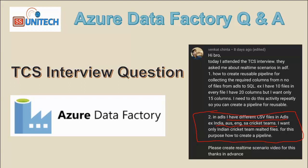So for example, if any tournament is going to happen, all those details will be in a particular CSV file. That file will have combinations like India playing with Australia in one file, and India playing with England in a second file. So such types of files we are having.